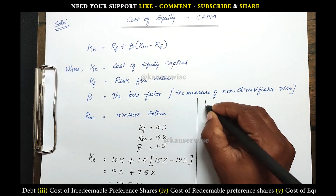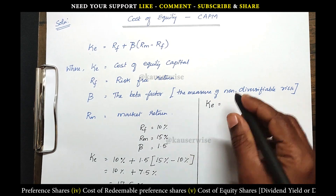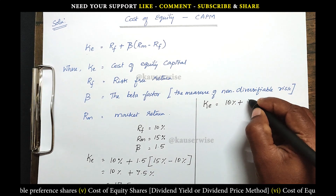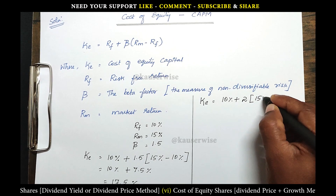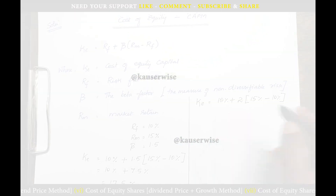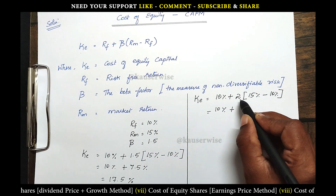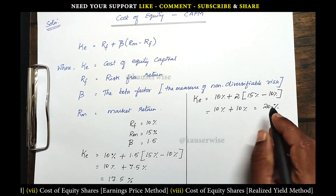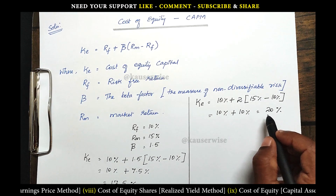Calculation for the first scenario: cost of equity is equal to RF 10%, plus beta value 2 — the revised value is 2 — into RM 15% minus RF 10%. So 10% plus 15 minus 10 equals 5, and 5 into 2 equals 10%, so total is 20%. This is the new cost of equity if the beta value is raised to 2.